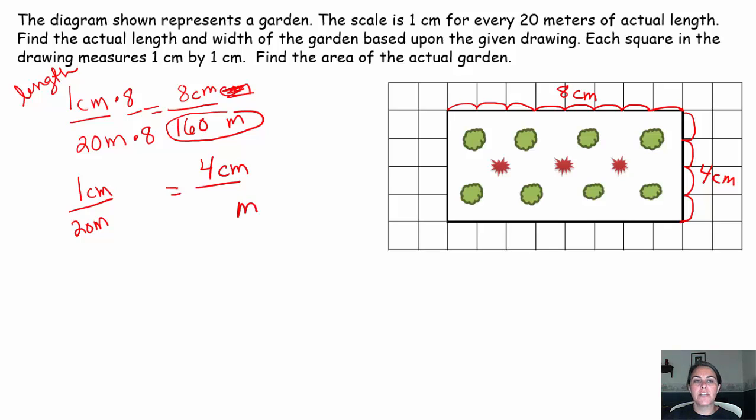And I want to know how many meters that translates into in my actual garden. So we say one times four is four, which means we need to take 20 times four, which is 80. So the width of my actual garden is 80.